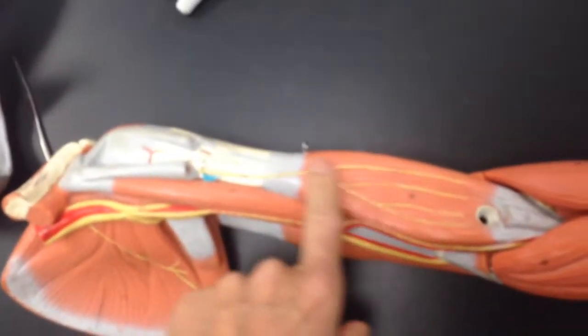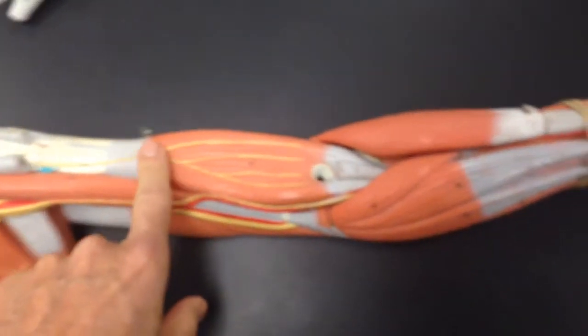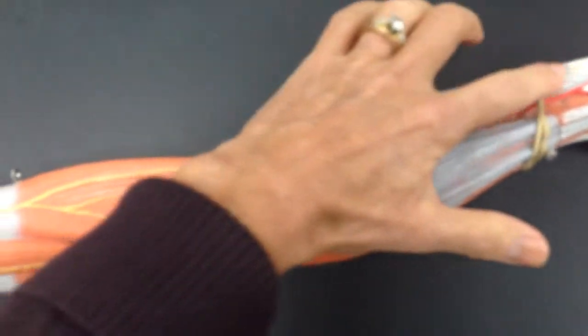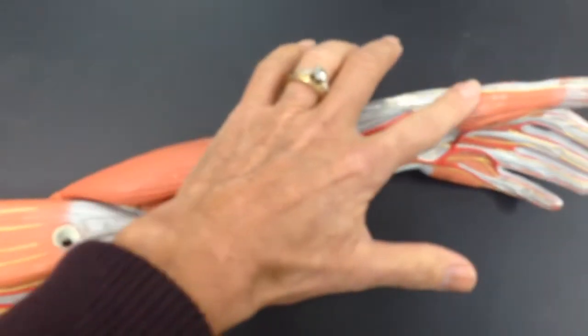Underneath the bicep is the brachialis. Coming down here is the brachioradialis. Notice how it comes to the thumb.